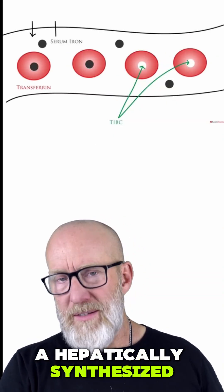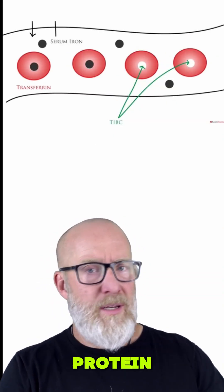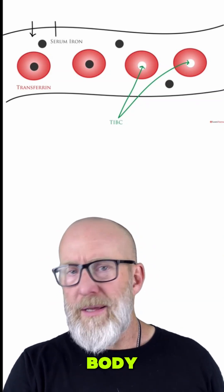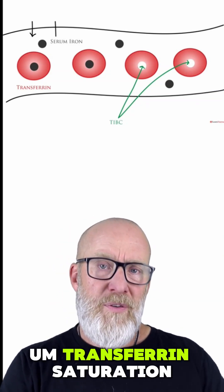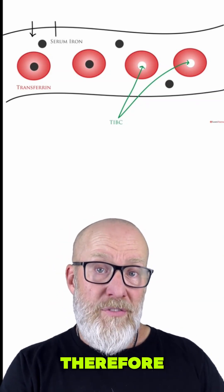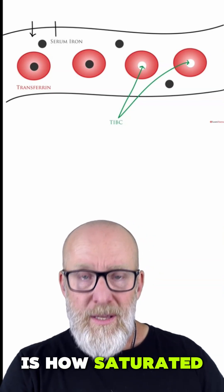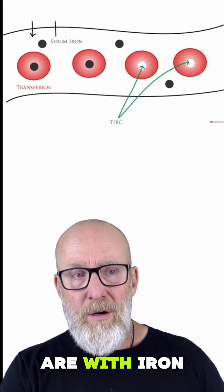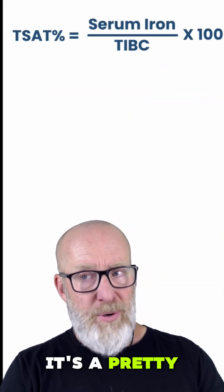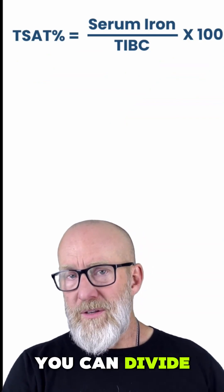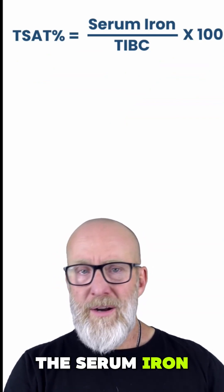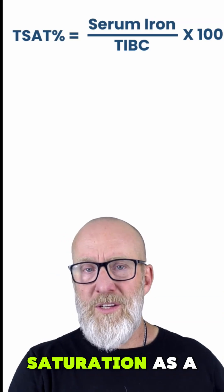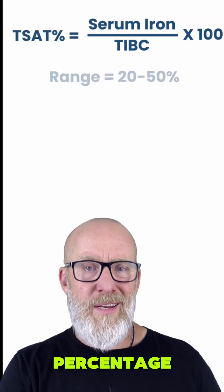Transferrin is a hepatically synthesized protein that binds onto iron and transports it around the body. Transferrin saturation, therefore, is how saturated the transferrin proteins are with iron. It's a pretty easy calculation — you divide the serum iron by TIBC, multiply it times 100, and that gives you the transferrin saturation as a percentage.